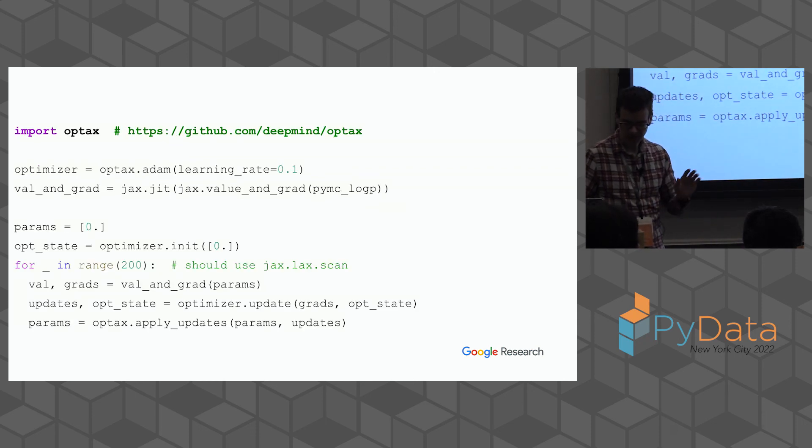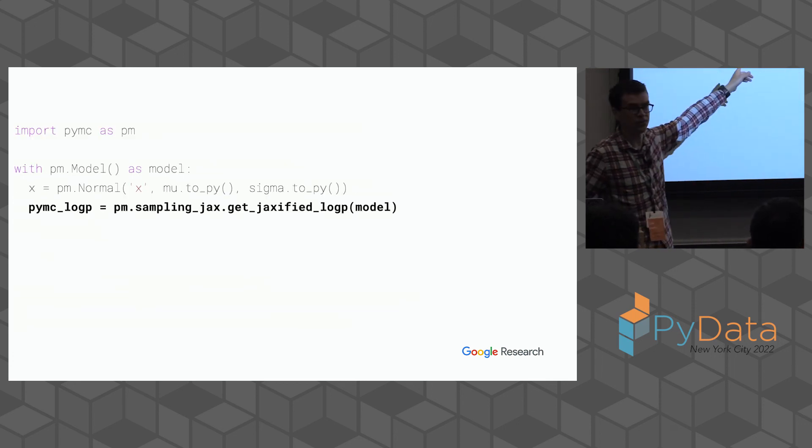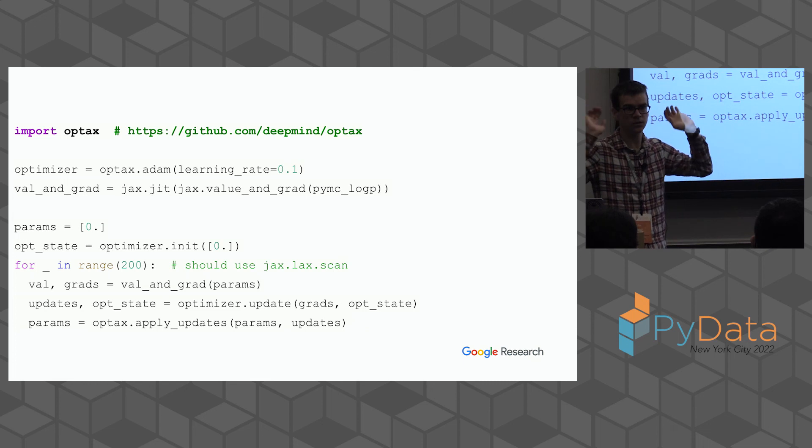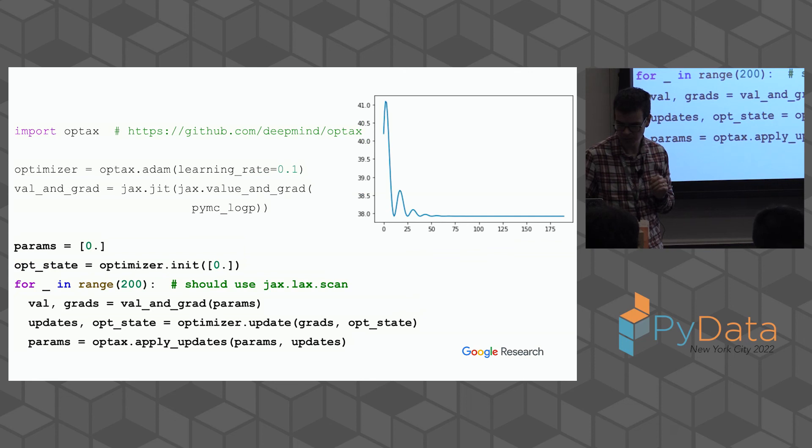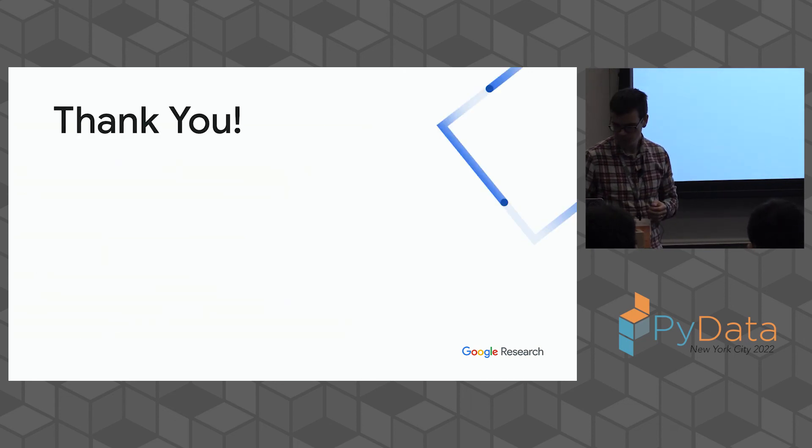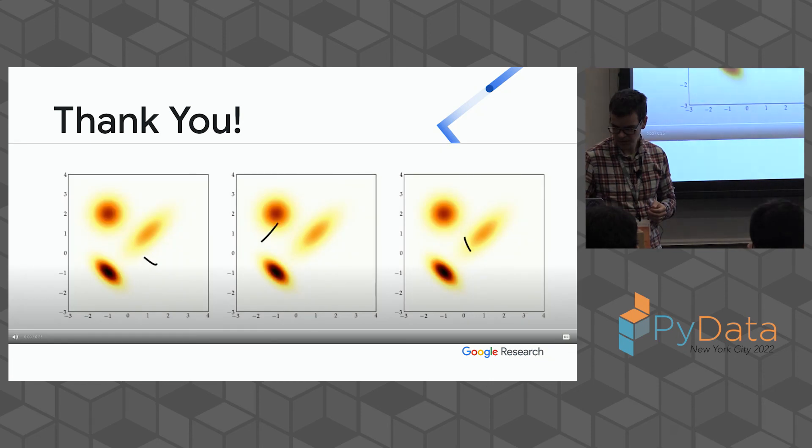The last thing which I'm not going to focus on too much is, once you have this JAXified log probability from PyMC or something from Distrax or whichever library you have, you can go and use the rest of the JAX ecosystem as well. This is Optax, which is just an optimization library. You can go and use Adam and optimize the log probability. This is just finding this maximum a posteriori estimate, which people often care about doing.